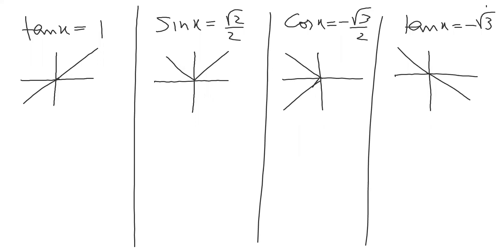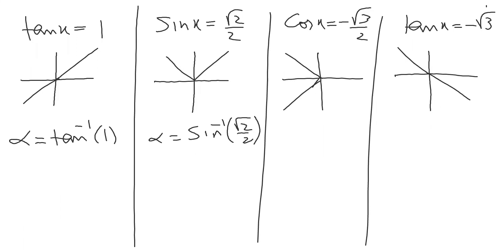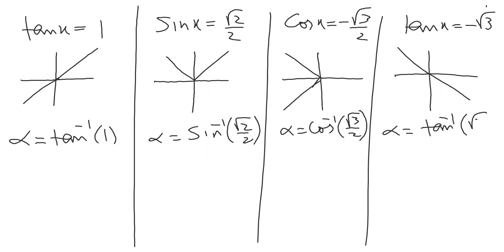First of all, make the criteria. You take tan inverse — tan will go there. You skip the angle and write just alpha here. Alpha is equal to tan inverse of one. Same story: sine will go there, so alpha equals sine inverse of root two by two. Same here — cos will go there, and write alpha equals cos inverse of root three by two. But this minus sign you will not take here — make sure.